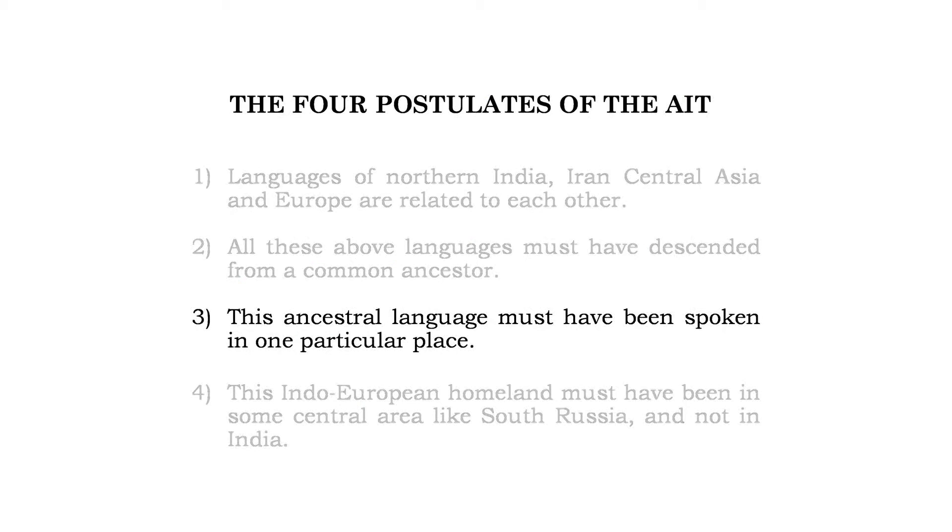The third postulate is that this ancestral language must have been spoken in one particular place. The Aryan languages are spread from Sri Lanka in the south — because South Indian languages are Dravidian, not Aryan, but Sinhalese, the language of Sri Lanka, is an Aryan language — right through to Scandinavia and Britain. It cannot be possible that the original Proto-Indo-European was spoken across this entire area; it must have been spoken in one particular area and then spread. That particular area is the Proto-Indo-European homeland.